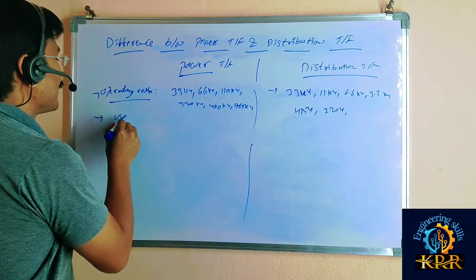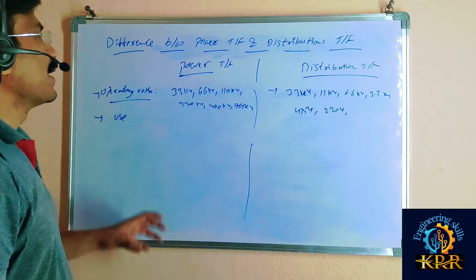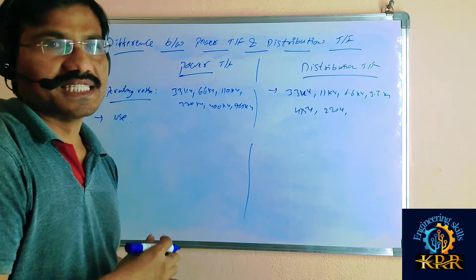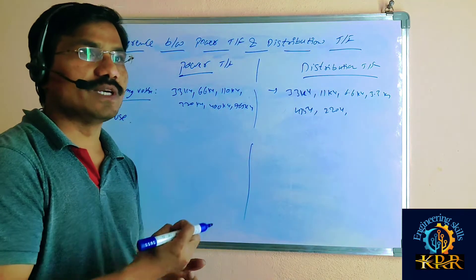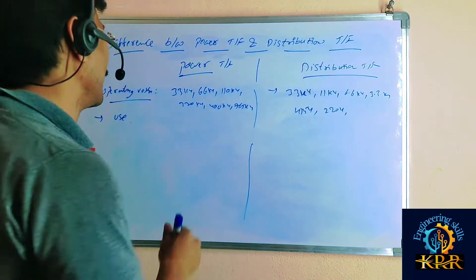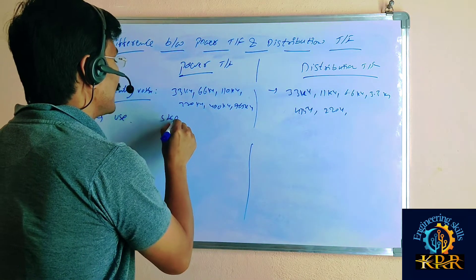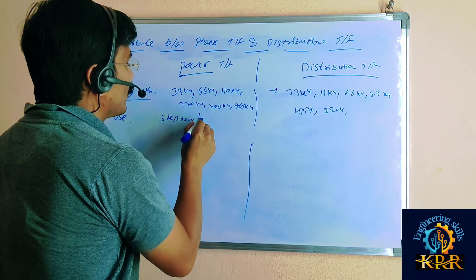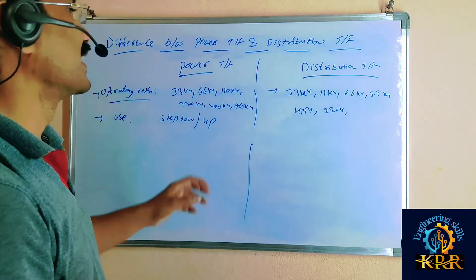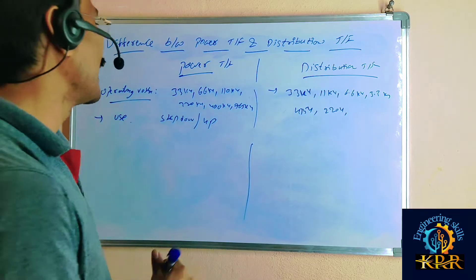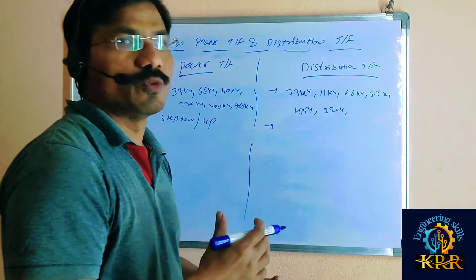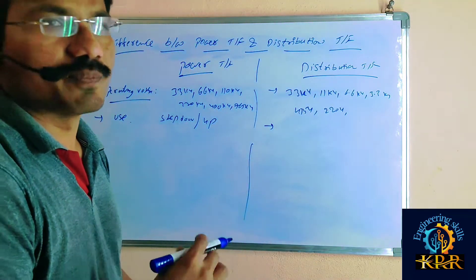As per use, the power transformer is used for both functions: step down the voltage as well as step up the voltage. Both step down and step up operations are used in the power transformer. If you go for the distribution transformer, it is used only to step down the voltage.